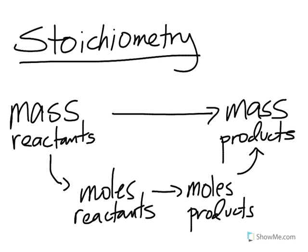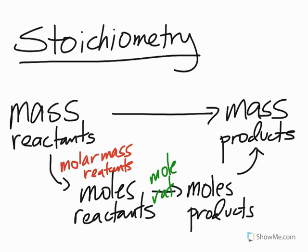Now, for each one of these different things, you need a conversion factor. For this first one, we need the molar mass of the reactants. For this middle section, we need the mole ratio, and that's from the balanced equation. And then for this last part, we need the molar mass of the products.